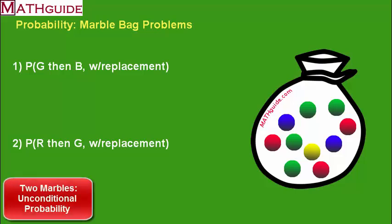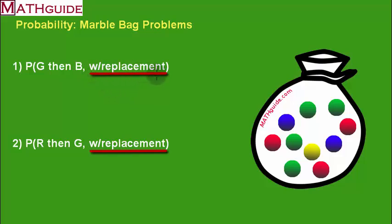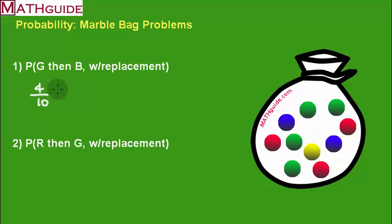In our second section, we're going to talk about unconditional probability when we pull two marbles from the bag. We'll pull a marble, look at the color, and then toss that marble back in the bag before pulling our second marble. We call these marble bag problems with replacement. So what's the probability of pulling green? There are 4 green out of 10 marbles.